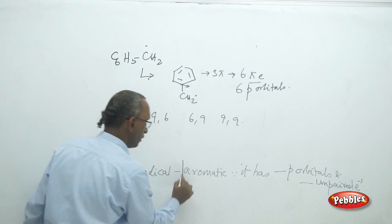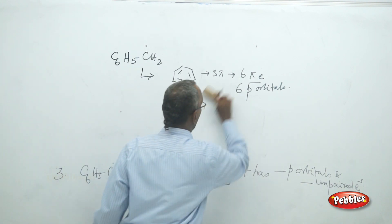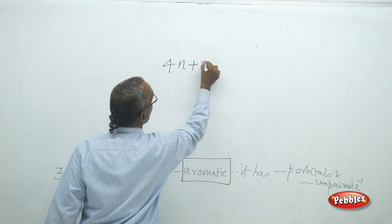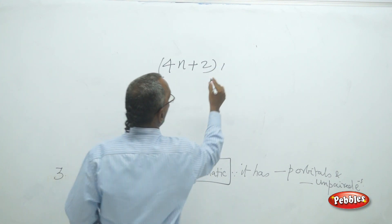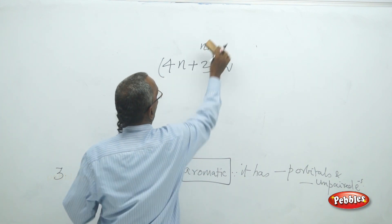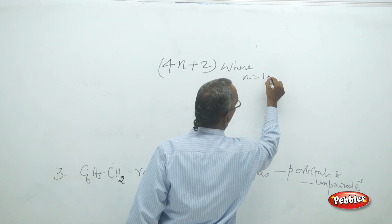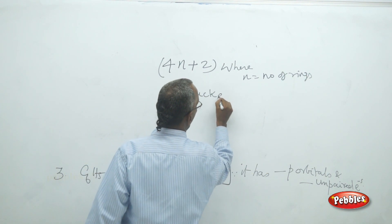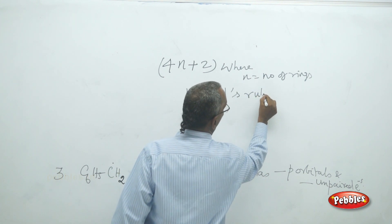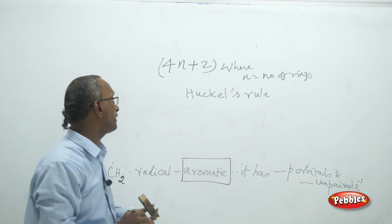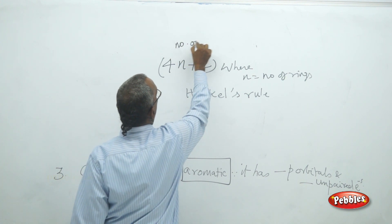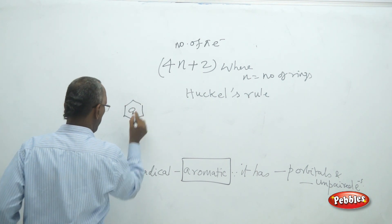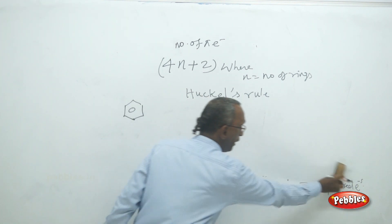We have to note the condition for aromaticity. For a compound to be aromatic, the number of pi electrons is 4n plus 2, where n is the number of rings inside the compound. This is called Huckel's rule of aromaticity. Huckel's rule states that the number of pi electrons is 4n+2. For example, you can check for benzene and naphthalene.